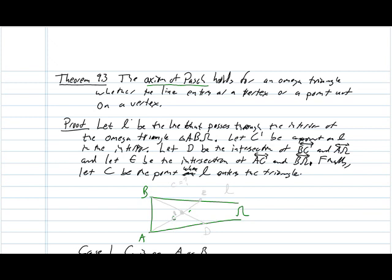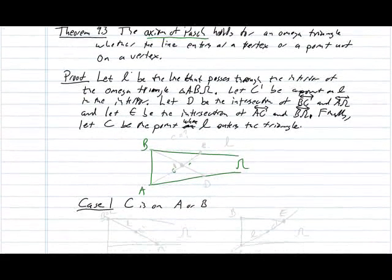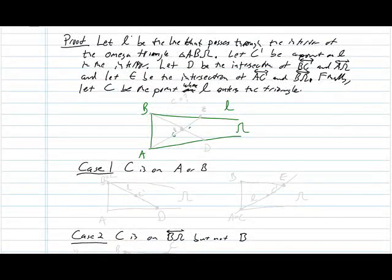Recall that the axiom of Pasch says that if a line passes through the interior of a triangle, then if it enters at a vertex it must exit the triangle at the opposite side. And if it enters the triangle at a side, it must pass through either the opposite vertex or one of the opposite sides. So we're going to assume that a line L enters this omega triangle and that C prime at this point right here is one of the points that L passes through.